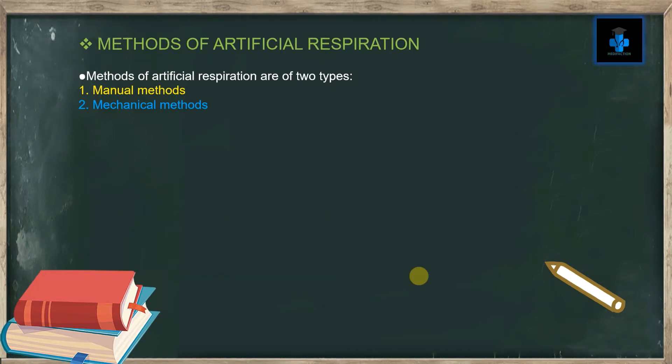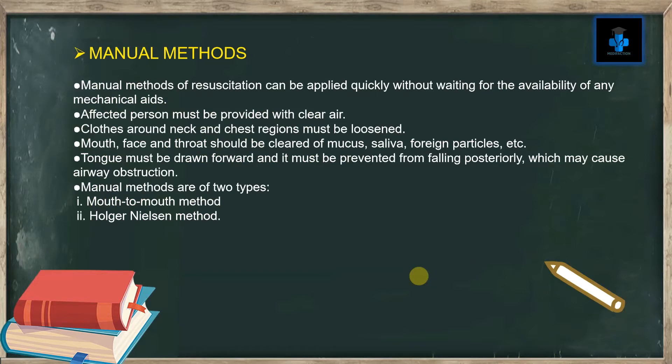Manual methods of resuscitation can be applied quickly without waiting for the availability of any mechanical aids. The affected person must be provided with clear air; clothes around the neck and chest regions must be loosened. The mouth, face, and throat should be cleared of mucus, saliva, and foreign particles. The tongue must be drawn forward and prevented from falling posteriorly, which may cause airway obstruction.